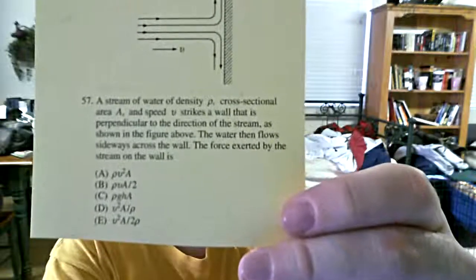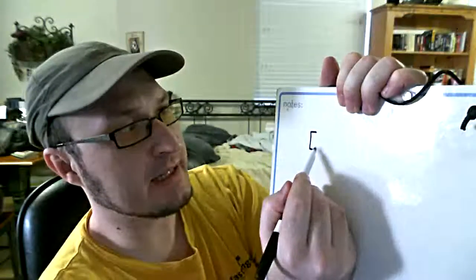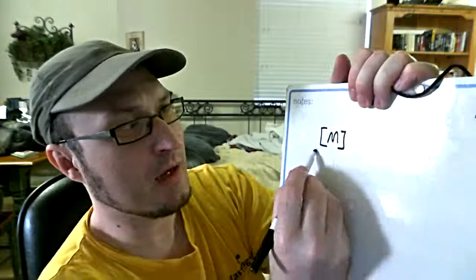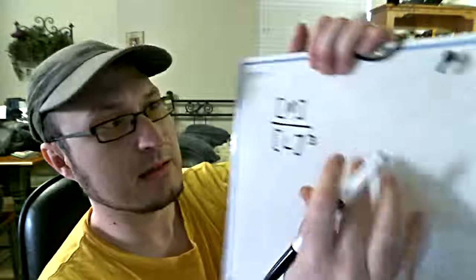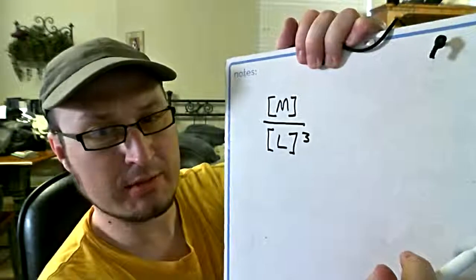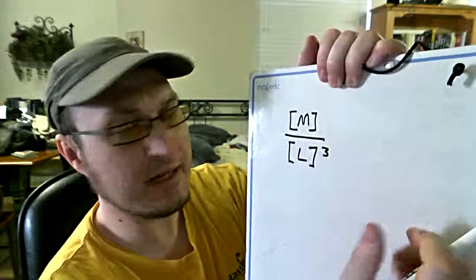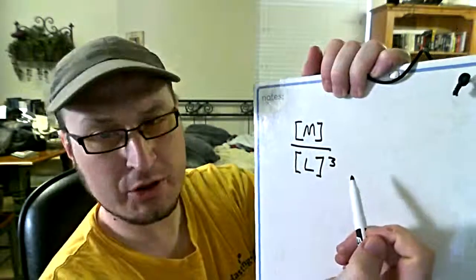Looking at answer D and E, notice that the density is at the bottom. Now the density has... in my head now, I know a lot of people when they do dimensional analysis they think something like this. I've seen this before, you would do a density like this: mass divided by length cubed. I've seen people write dimensions like this with the brackets.